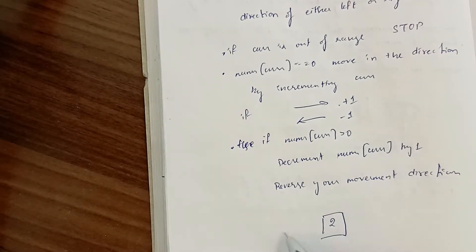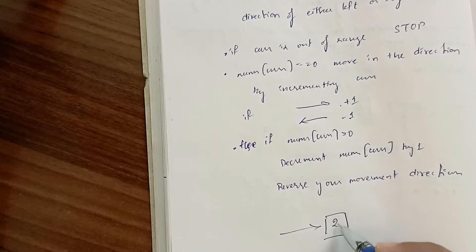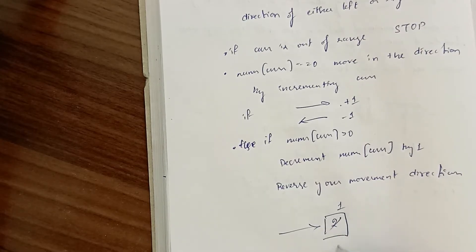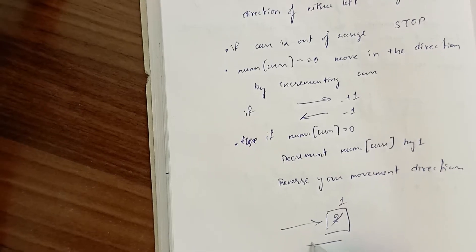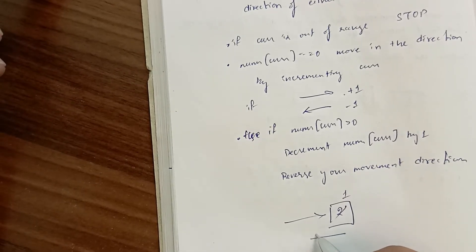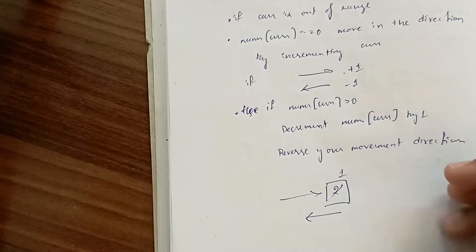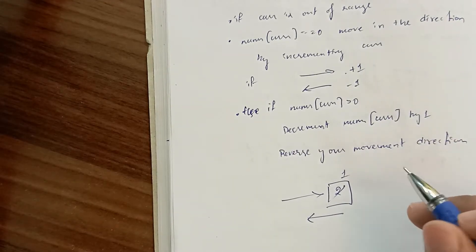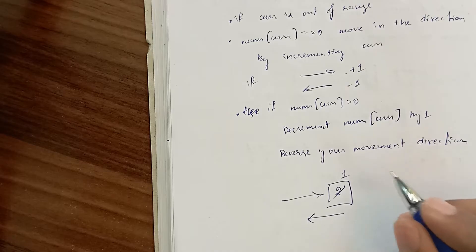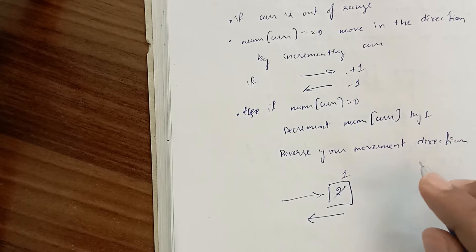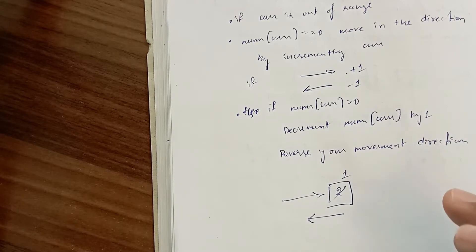For example, if nums[current] is 2 and we are moving right, we decrement it to 1 and now move left. We return the count of valid selections of initial position and direction such that every element in nums becomes 0 by the end of the process.